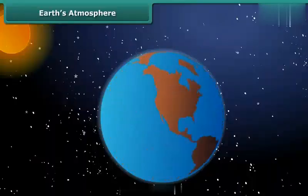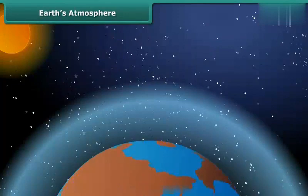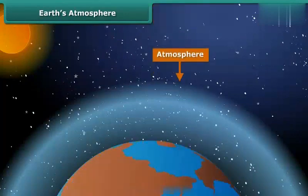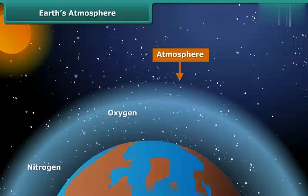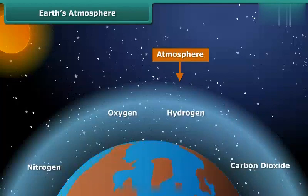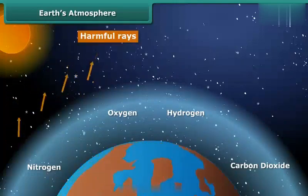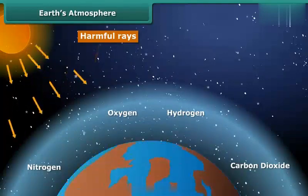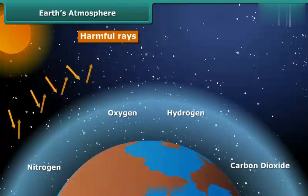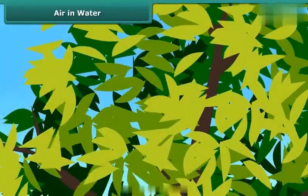Our earth is surrounded with a blanket of several gases called the atmosphere. This atmosphere contains mainly nitrogen, oxygen, hydrogen, and carbon dioxide along with some other gases. The atmosphere protects us from some harmful rays that can come from the Sun, and plays a very important role in regulating the temperature of earth.